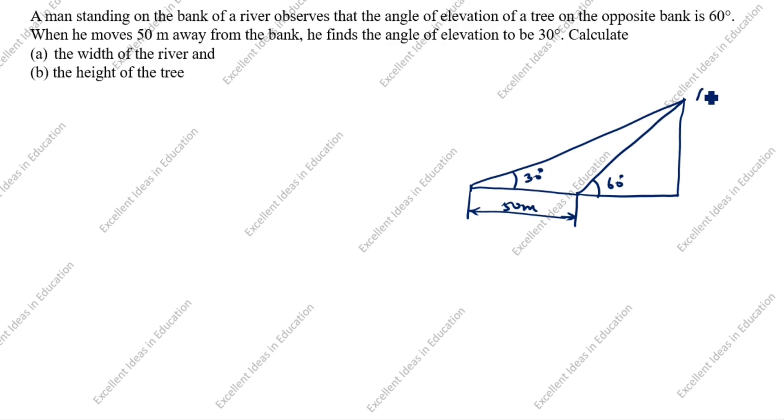Now we will write the name in A, B, C, D. What we need to find in this question: calculate the width of the river and the height of the tree. Width of the river means this width we need to find, we will write it as x. This height of the tree we will take it as h. Now we will solve the problem.